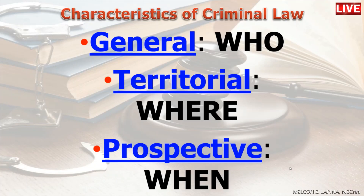Let us now discuss the characteristics of criminal law. We have three characteristics of criminal law: general, territorial, and prospective. It is very easy to tell which is which because when we say general, it answers the question who. Territorial answers the question where. And prospective answers the question when. So let us first take up general.